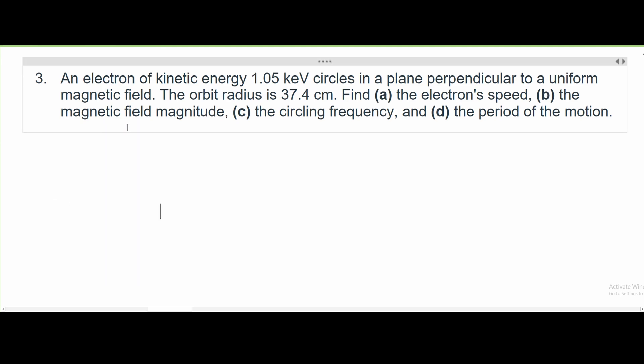For number three, we are given that an electron of kinetic energy 1.05 keV circles in a plane perpendicular to a uniform magnetic field. The orbit radius is 37.4 centimeters, and we're asked for part A to find the electron's speed.